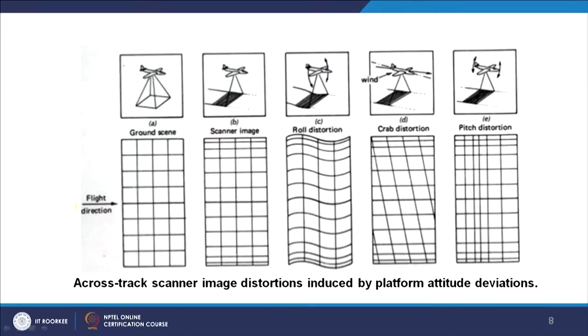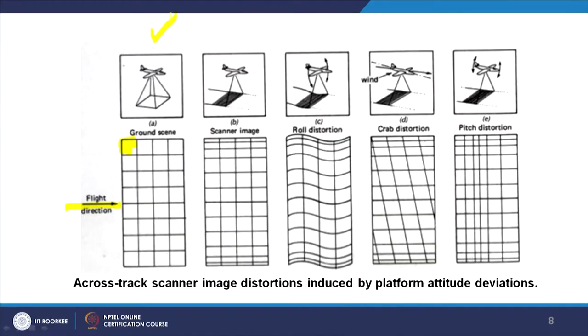That way we can achieve a geographic coordinate system instead of a geometric coordinate system and get rid of all these distortions. Consider the flight direction and a grid on the ground to test it — each pixel should ideally be square in shape, which is what we know as raster. That is the ideal condition we would prefer.